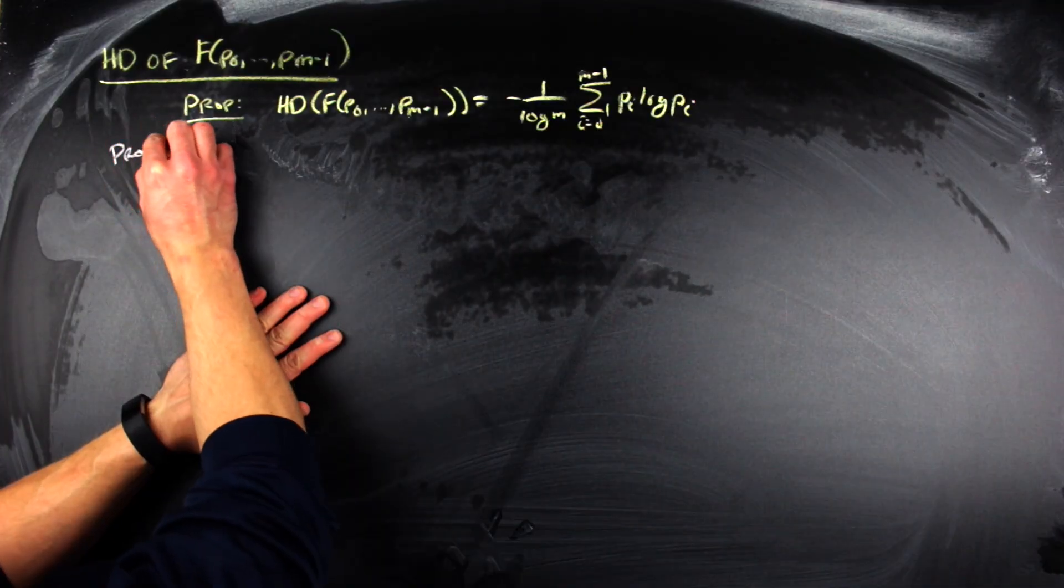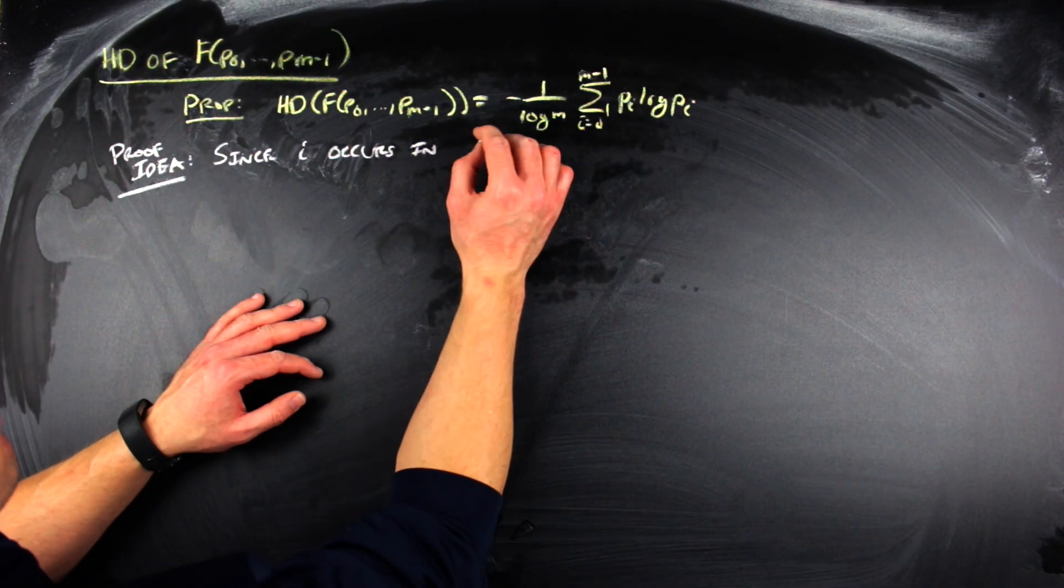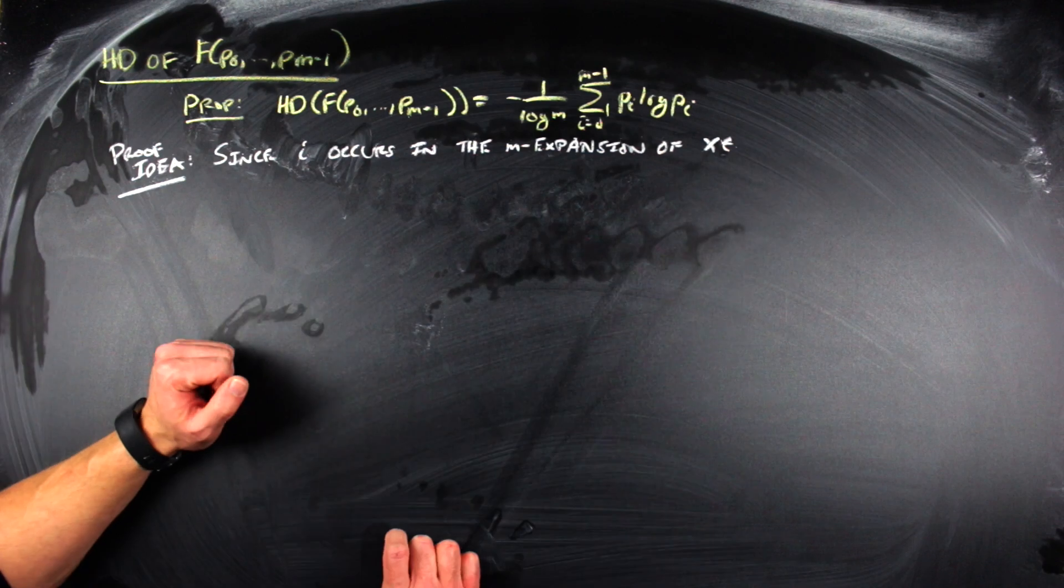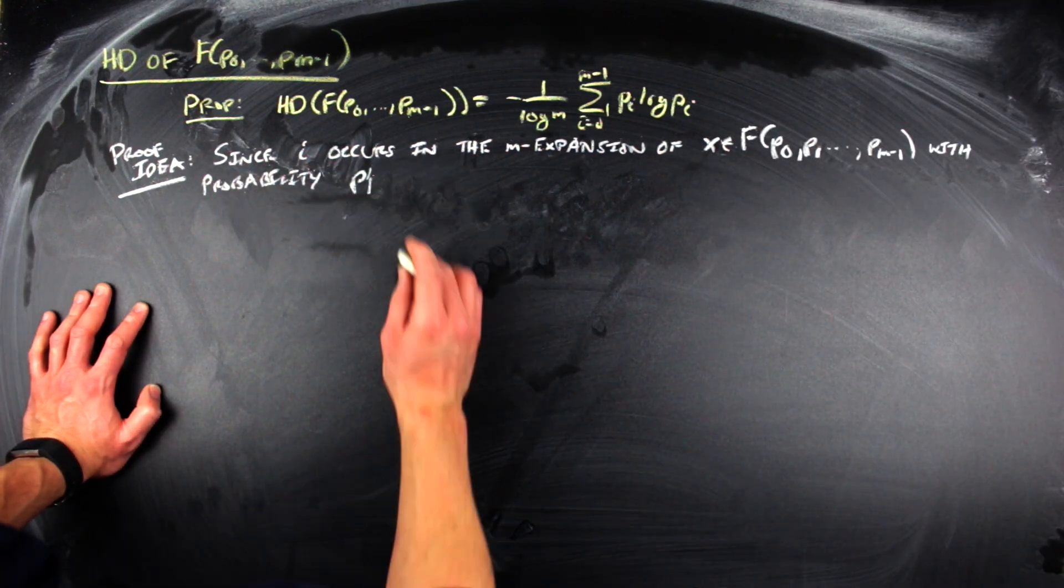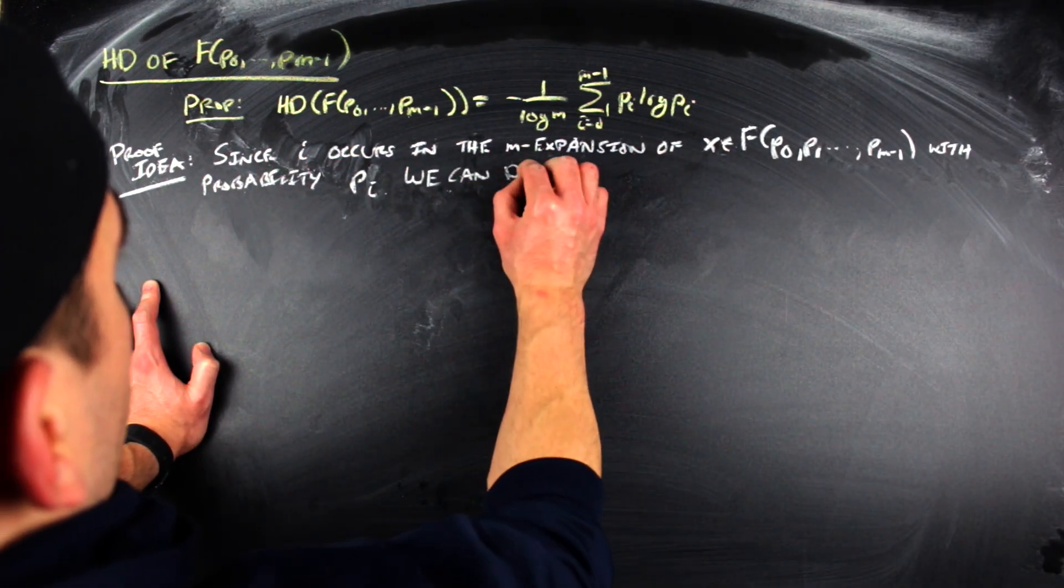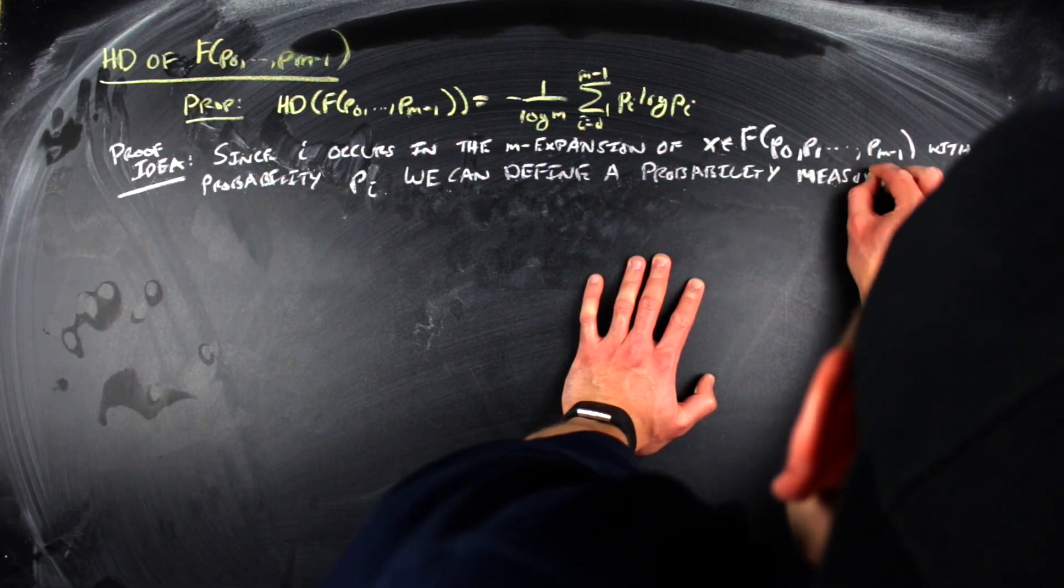It just uses some estimation stuff that we talked about earlier or some variations on methods that we've talked about in earlier videos. Let's jump into it. Since J occurs with probability P sub J, we define a probability measure on the unit interval by saying that the probability that the first term in the symbolic representation of a point is J is equal to P sub J.